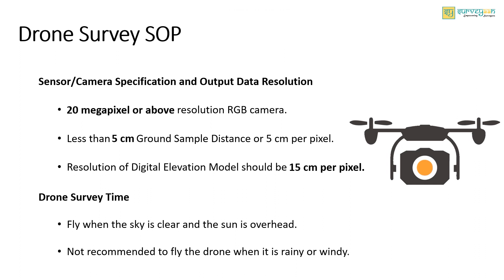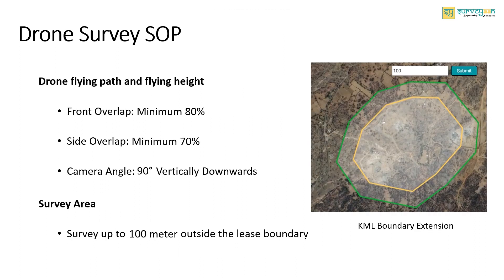Do not fly the drone when it is rainy or windy. The path plan should be such that there is enough overlap between photos. The front overlap should be a minimum of 80 percent and the side overlap should be a minimum of 70 percent. The flight altitude should be as per DGCA prescribed limits, and the camera angle should be kept at 90 degrees vertically downwards. The survey should cover the entire mining lease area, capturing all mining allied activities and 100 meters beyond the periphery of the mine to monitor environmental impact and ascertain any excavation therein.